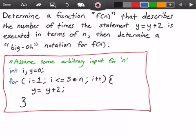Hey guys, and welcome to this video on algorithm analysis. In this video we want to determine a function that we're going to call f of n that describes the number of times the statement y equals y plus 2 is executed in terms of n. Then we're going to determine a Big O notation for our function f of n.